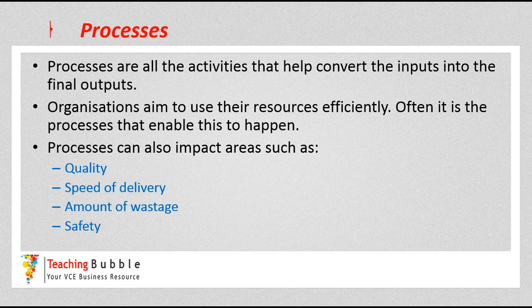Processes is the next stage in the operation system. They are all the activities that help convert or transform the inputs into the final outputs. You may see in some textbooks that refer to these as transformations or transformation processes — either term is fine, it's the same thing. Organizations aim to use their resources really efficiently, and often it's the processes that enable that to happen. That's often why organizations implement machinery, equipment, or technology into their operation system to make really efficient use of their resources.